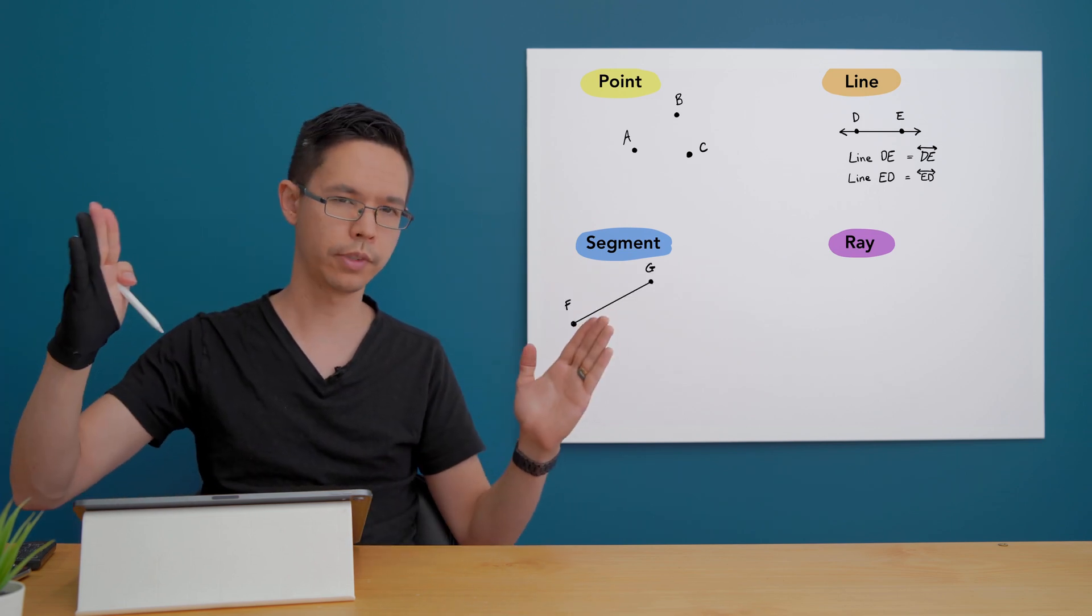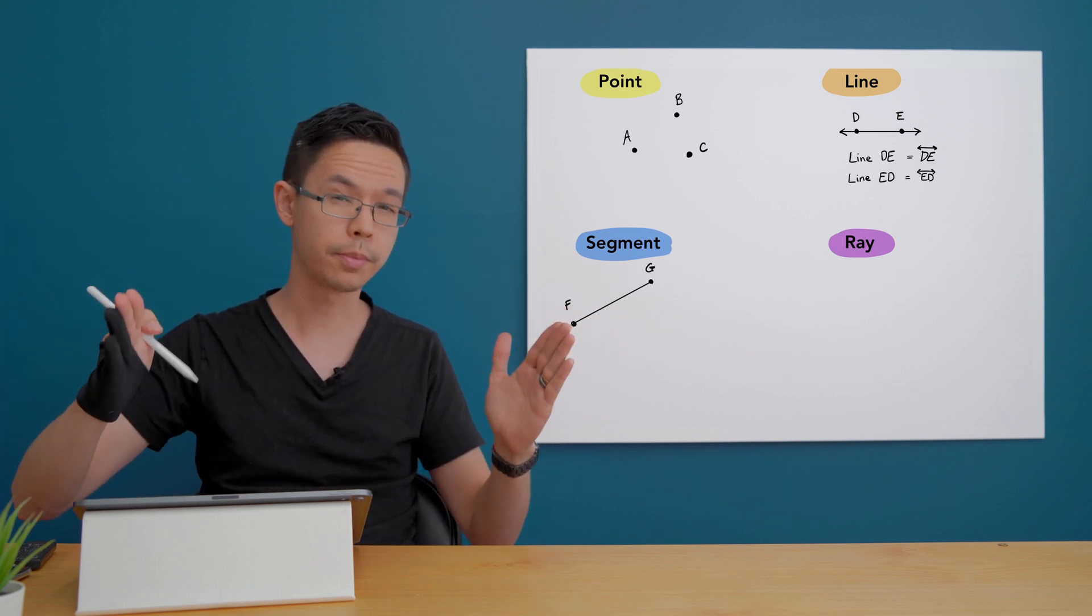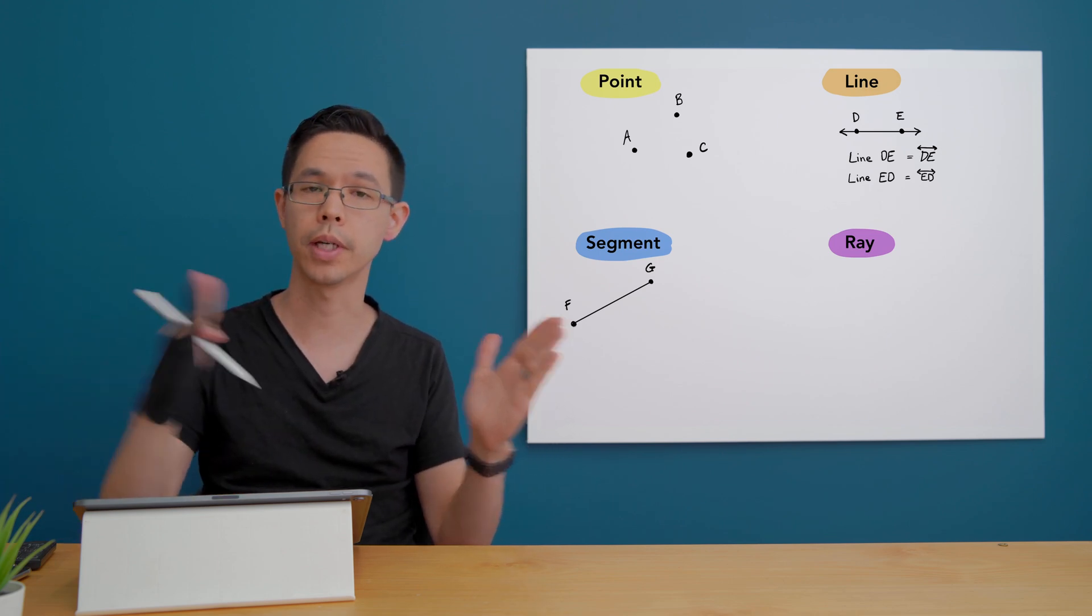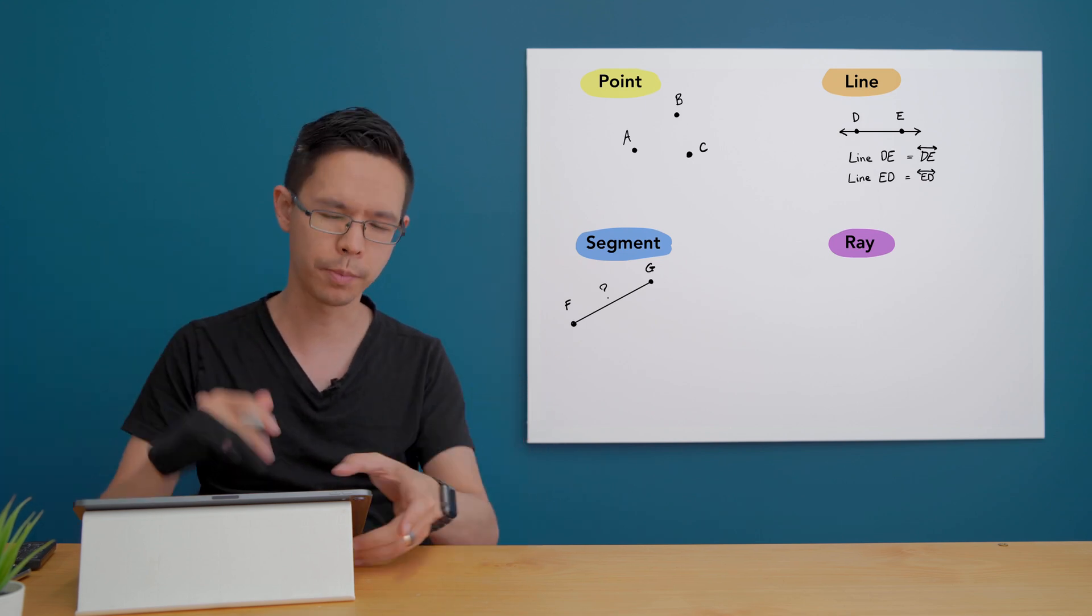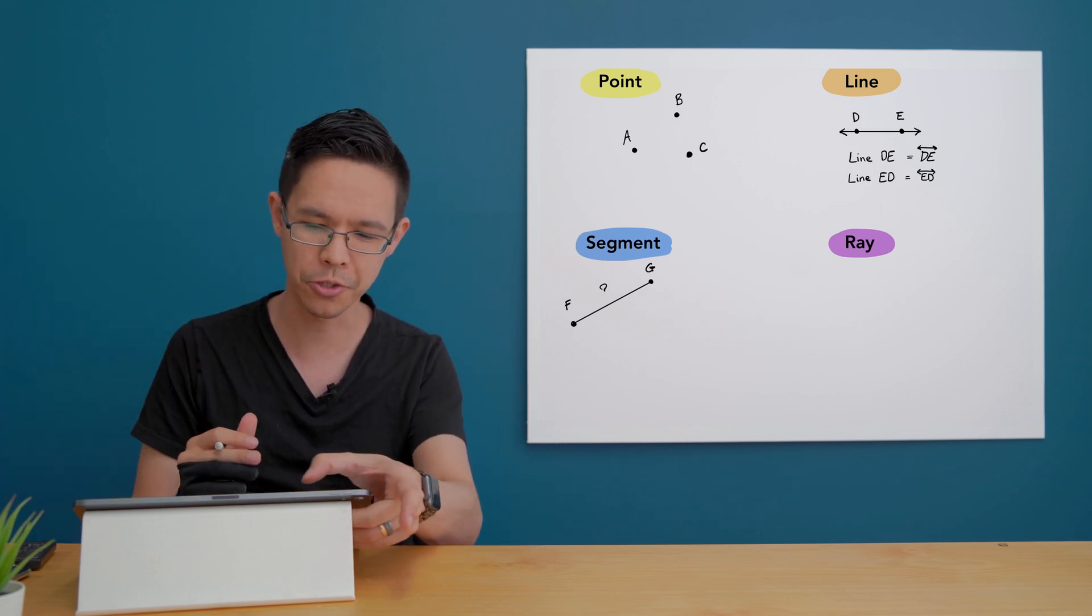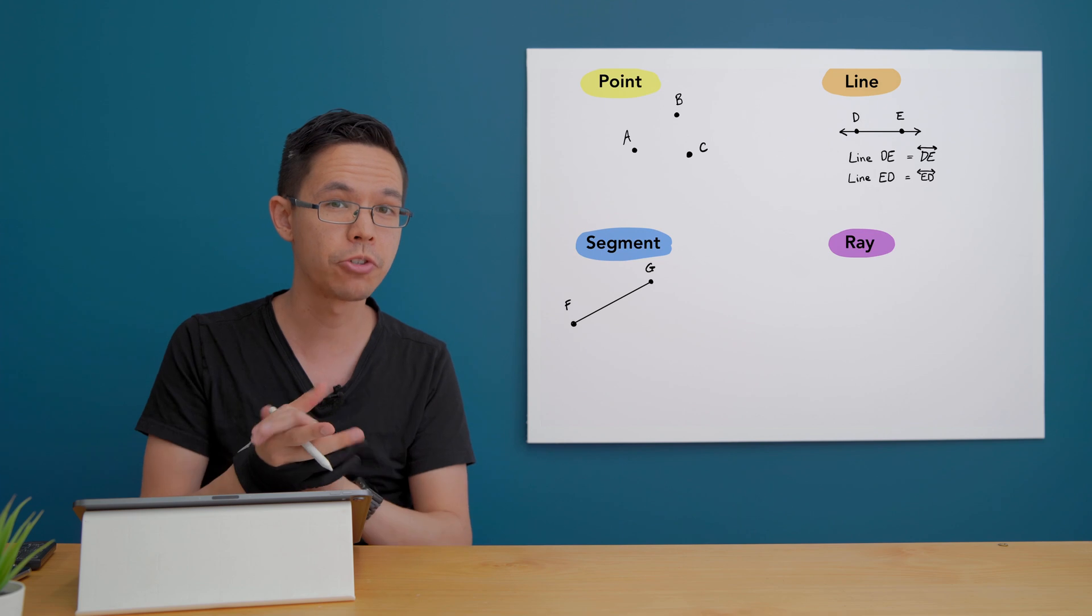So because it's a portion of a line it has the start and end but it also has a defined length to it. So I could put a ruler on here and find out how long that one is but I'm not going to go ahead and measure it with a ruler right now.